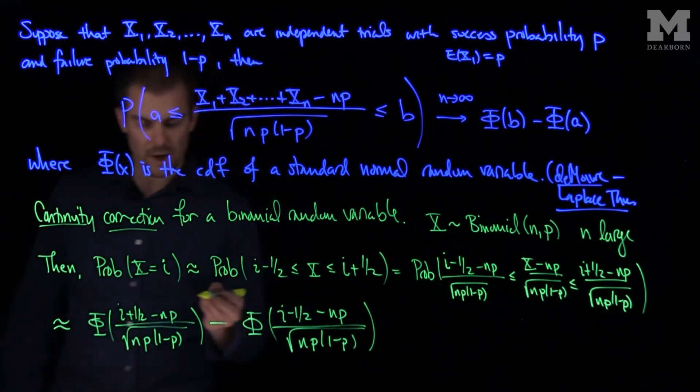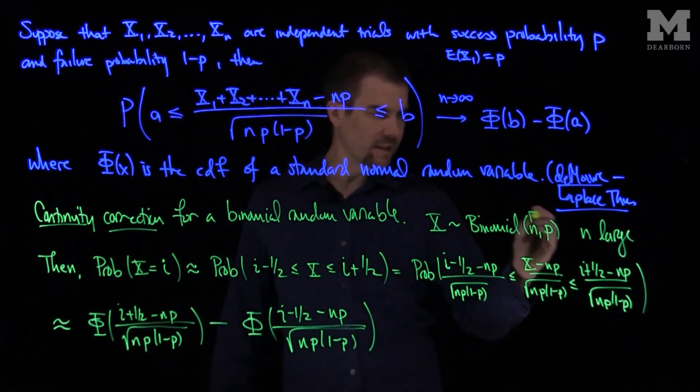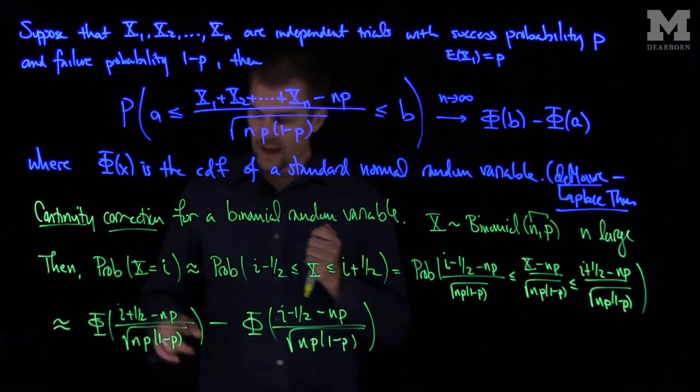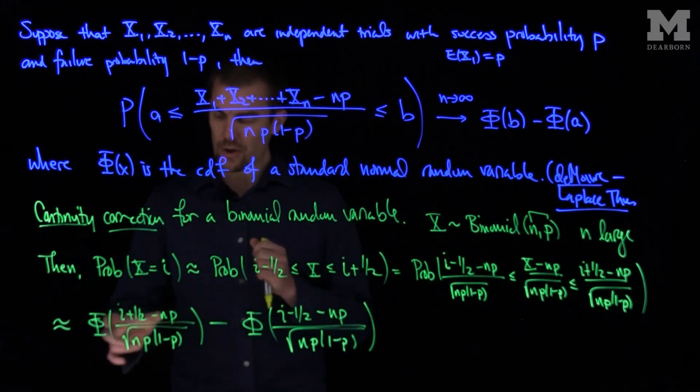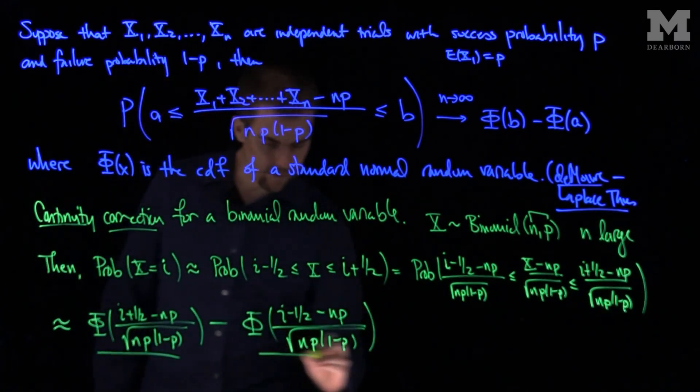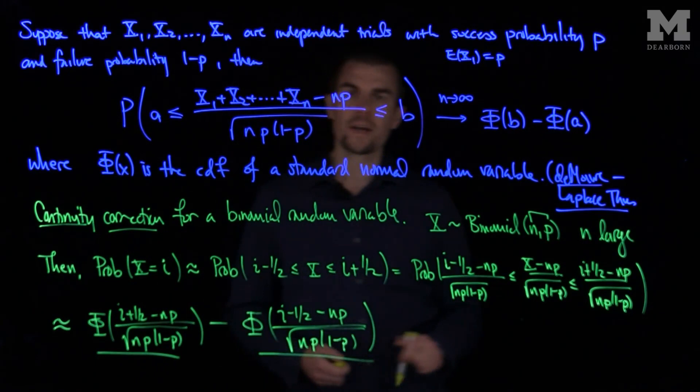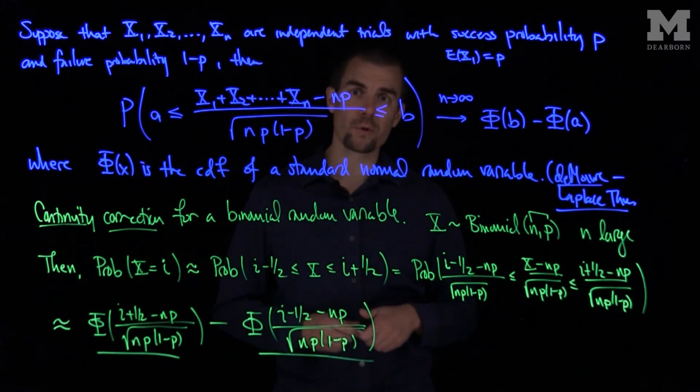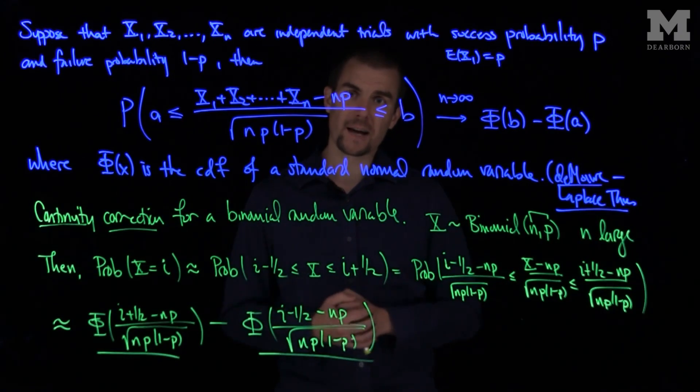So whenever we're doing problems like this, we can identify what n times p is, that will tell me the mean. I can identify n times p times 1 minus p, that will give me the variance, and I can write down the normalization and use this approximation, the difference of these two values of the CDF of a standard normal random variable, and that will give me the continuity correction, or the approximate probability that the binomial random variable with parameters n and p is equal to i. Thank you very much.